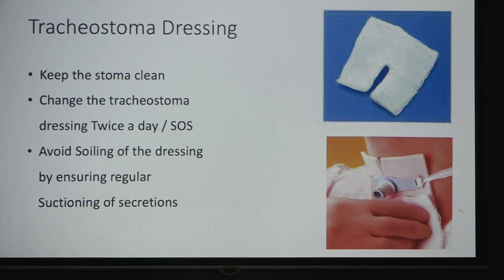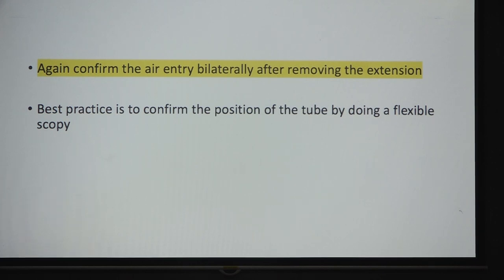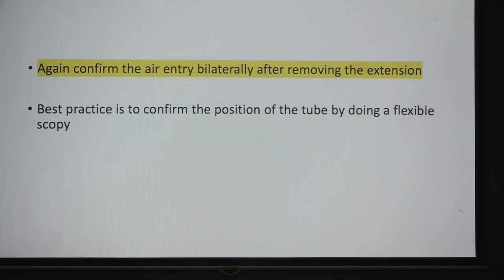Dressing the tracheostomy is very important — use gauze with ointment or strips of bactigras. Change dressing twice a day and avoid soiling by ensuring regular suctioning. After removing neck extension and returning to the flex position, check air entry bilaterally, as in young neonates or infants the tube may enter one bronchus. If a flexible bronchoscope is available, always check tube position on the table.